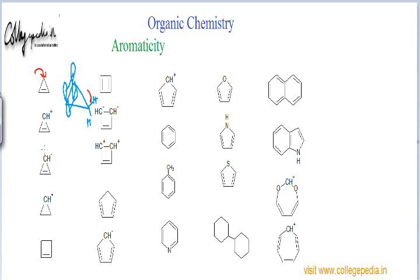For the next intermediate — the cyclopropenyl cation — we check the first criteria: planarity. This molecule is planar because all the atoms are sp2 hybridized. The carbocation is sp2 hybridized because one orbital is empty, as signified by the plus charge. The two atoms making the pi bond are also sp2 hybridized. So all three atoms in this molecule are sp2 hybridized.